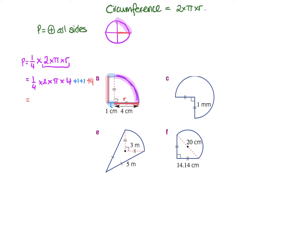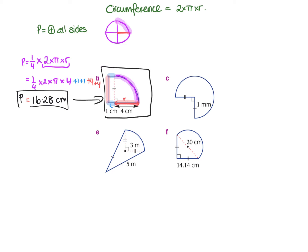So you do a quarter times 2 times the pi button times 4, then add 1, add 1, and add 4. We also have to remember to add this 4 as well, so we've actually got another 4. Pop all that into the calculator to get your answer. I end up with an answer of 16.28 centimetres. So the perimeter for this shape is 16.28.